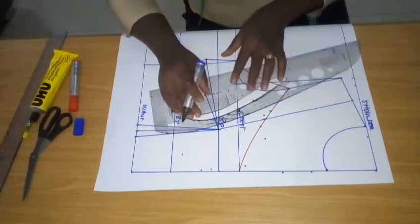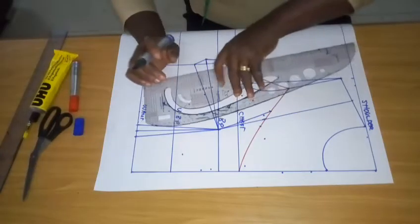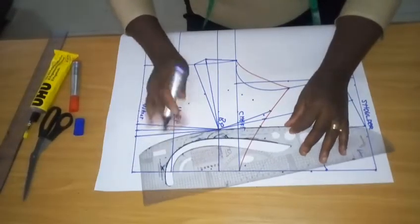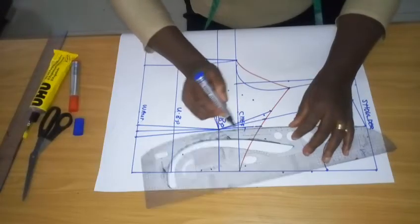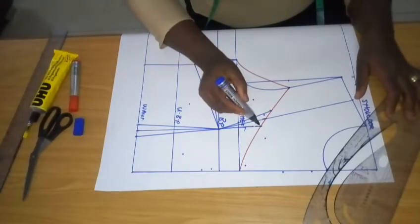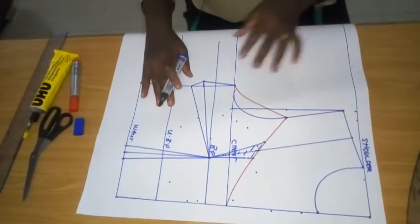So now I'm going to connect what I have there to the bust points. I'll flip my ruler like this. I'm also going to connect to the bust point. So that means we are cutting off everything we have right here.